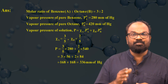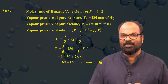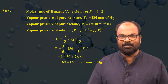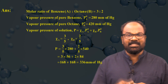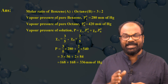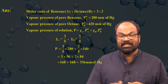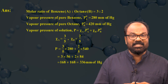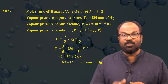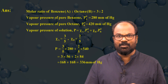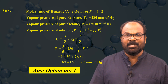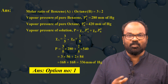Substituting these values: P = (3/5)×280 + (2/5)×420 = 3×56 + 2×84 = 168 + 168 = 336 mmHg. So the answer is option number one.